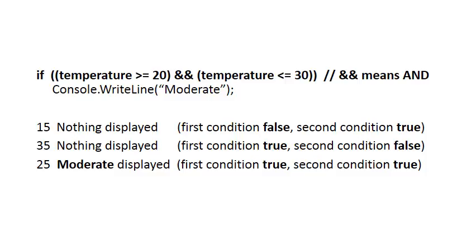If the user enters 35, the first condition is true because 35 is greater than 20, but the second condition is false because 35 is not less than or equal to 30. Once again nothing will be displayed because the overall condition is not true. If the user enters 25, both conditions are true, and because we have 'and', the full condition is true and 'moderate' will be displayed.